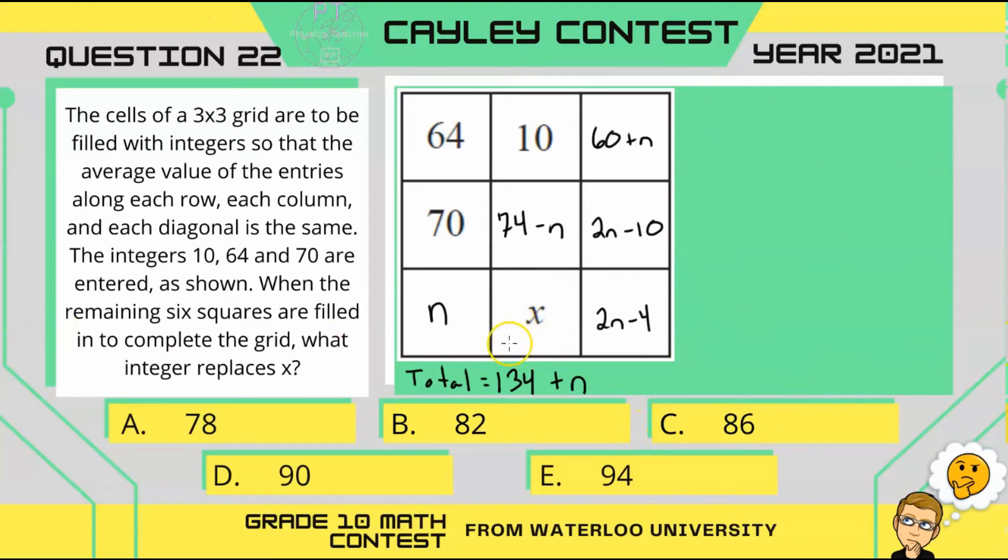Finally, let's try to figure out what x is. So, if we use this third row, we can say x is the total minus the other two cells. So, we have 134 plus n minus n minus 2n minus 4, which reduces to 138 minus 2n. So, let's write that in right here.